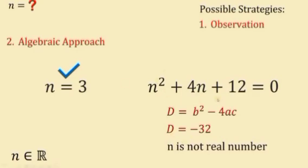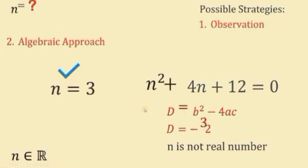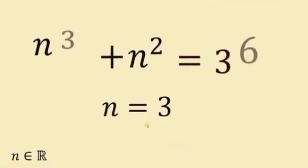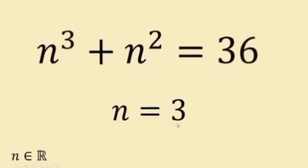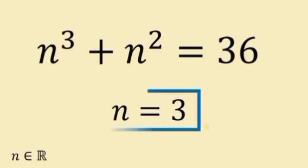Since the discriminant is less than zero, n is not a real number in that equation. Therefore, the only real number that satisfies n³ + n² = 36 is n = 3. And as always, we are done.